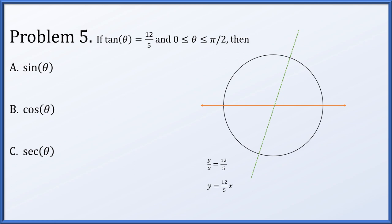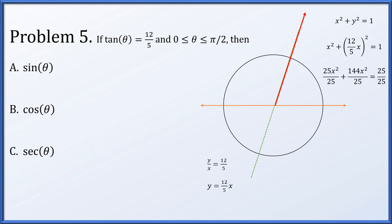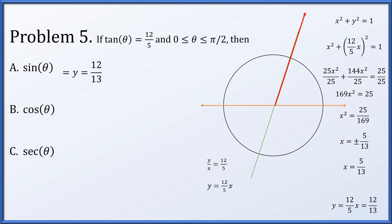Using x² + y² = 1 and substituting y = (12/5)x, squaring gives a denominator of 25. Solving, x² = 25/169, so x = ±5/13. Since theta is in the first quadrant, x = 5/13. Then y = (12/5)(5/13) = 12/13. The sine of the angle is the y-coordinate, 12/13. The cosine is the x-coordinate, 5/13. And the secant is 1 over the x-coordinate, which is 13/5.